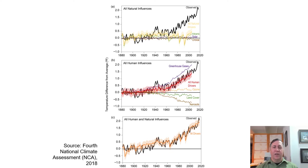Is this a natural process or is it human-caused? Graph A shows that natural temperature drivers like volcanic emissions, solar output, and orbital variances have remained flat over the past 140 years, whereas temperatures have increased sharply. Looking at Graph B, human emissions of greenhouse gases, primarily fossil fuel combustion, moderated by the release of particulates like soot, match the observed temperature increases almost exactly.